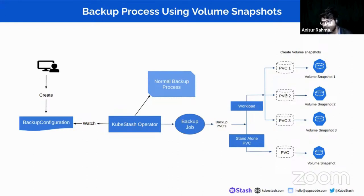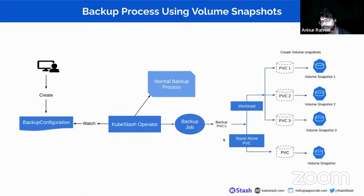Let's assume that you have a workload application with three PVCs: PVC1, PVC2, and PVC3, each as a storage volume. The backup job targets those PVCs and creates volume snapshots with each corresponding PVC — volume snapshot 1 for PVC1, volume snapshot 2 for PVC2, and volume snapshot 3 for PVC3. If you want to backup a single standalone PVC, the backup job targets that single PVC and creates a single volume snapshot for it. This is how the backup process works using volume snapshots.